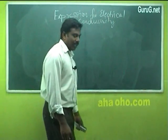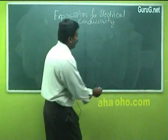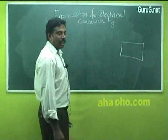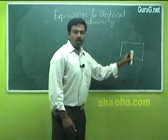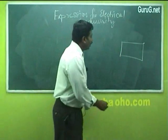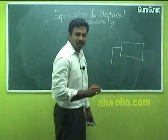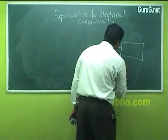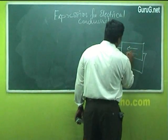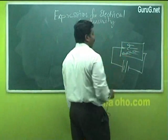Expression for electrical conductivity. To derive an expression for electrical conductivity, let us consider a metal. Before the application of the electric field, all the electrons will be moving in random motion. But on the application of the electric field, a potential difference is maintained between the two ends, and all the electrons will be drifted opposite to the direction of the applied electric field.